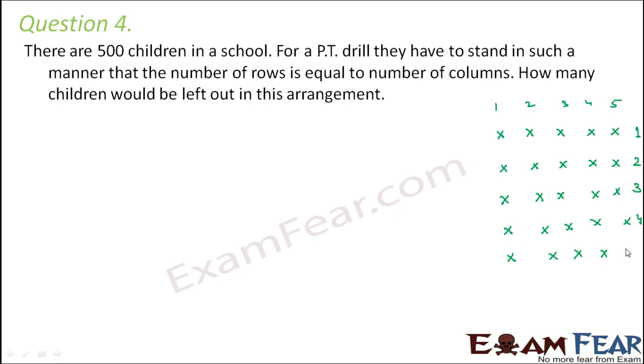So this is how the arrangement would be. If there are 5 rows, there should be 5 columns. If there are 10 rows, there should be 10 columns. Now whenever you try to satisfy this condition, you would see that you end up making a square. Because only a square has the shape where all the 4 sides are equal. So it could not be a rectangle. It has to be a square.